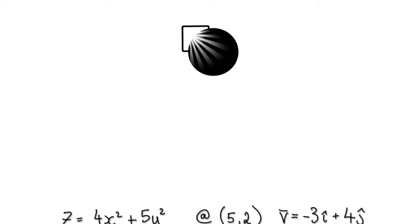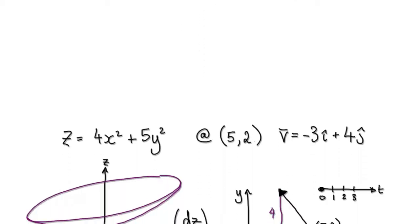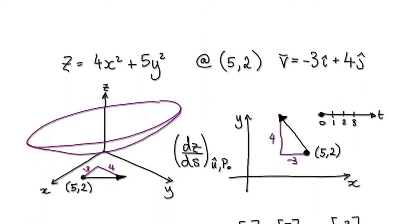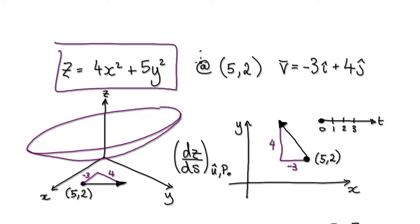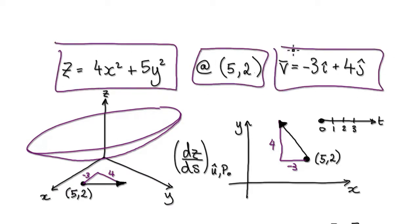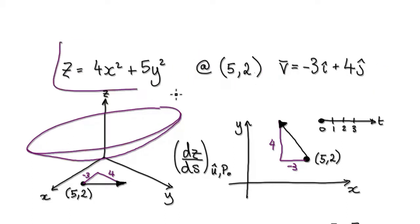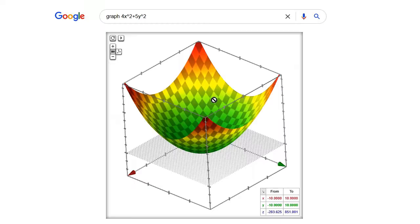Now I'm going to show you how to find the directional derivative of this surface at this given location in this direction. So you've got your surface — you would punch it into Google and see what it looks like. So that's your surface.